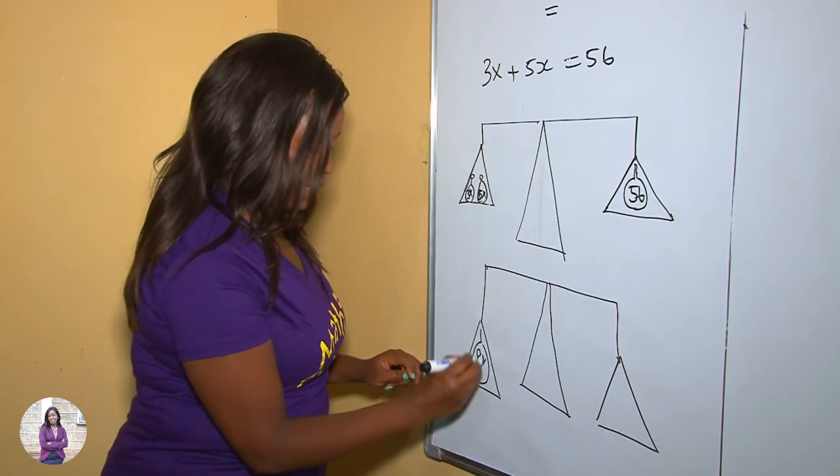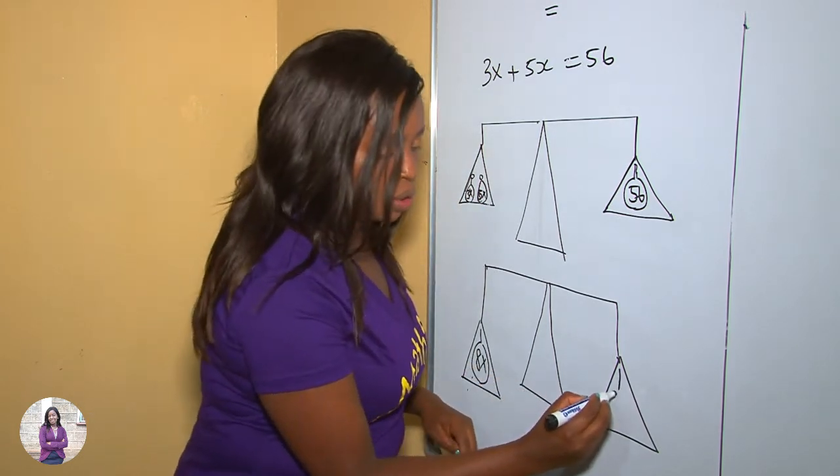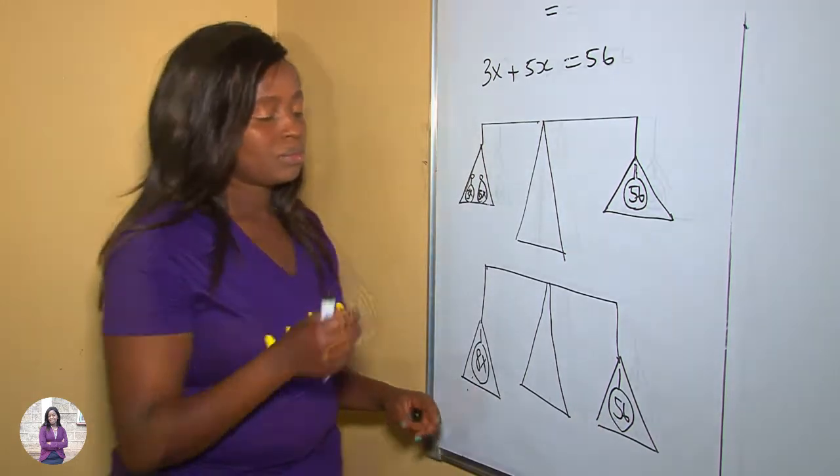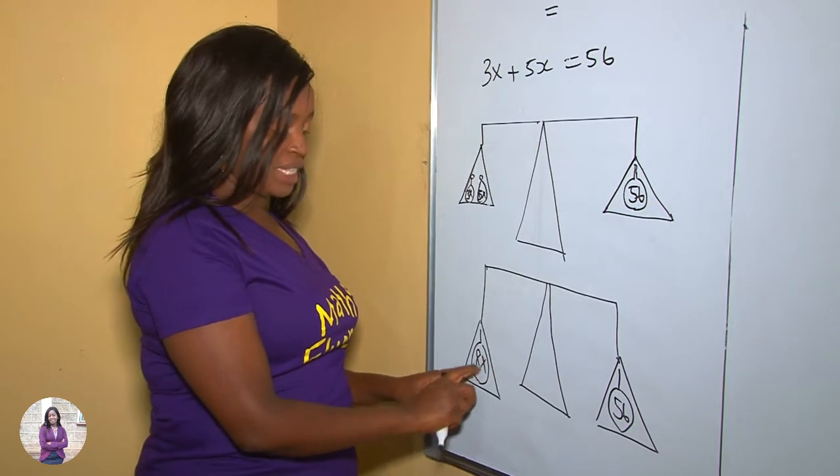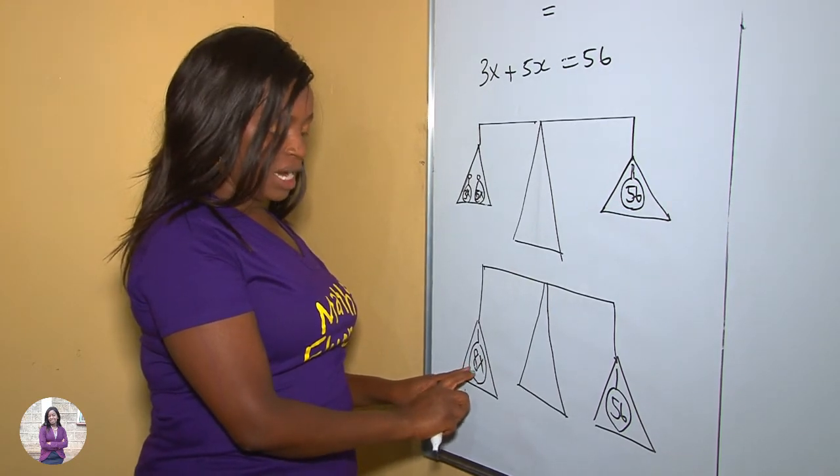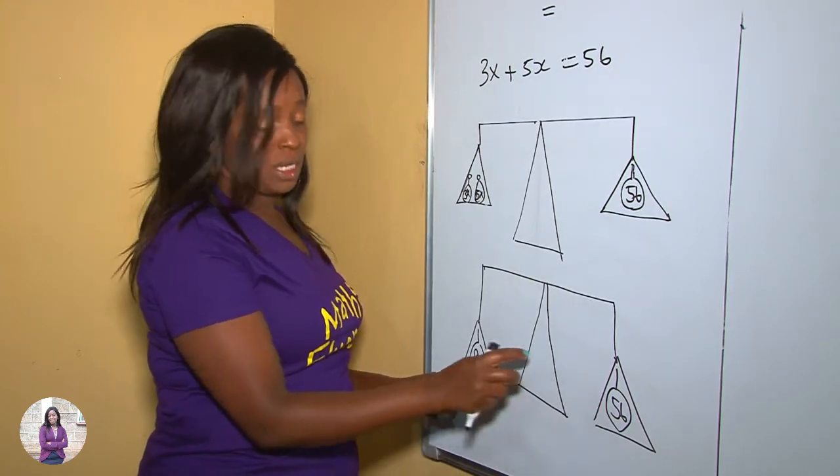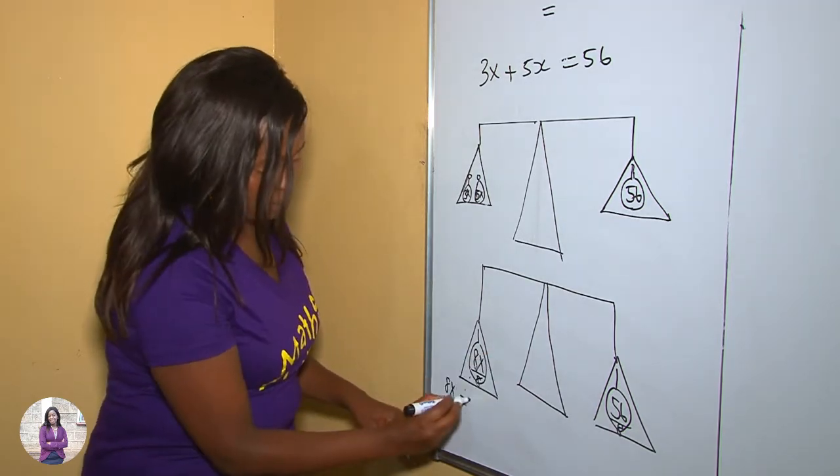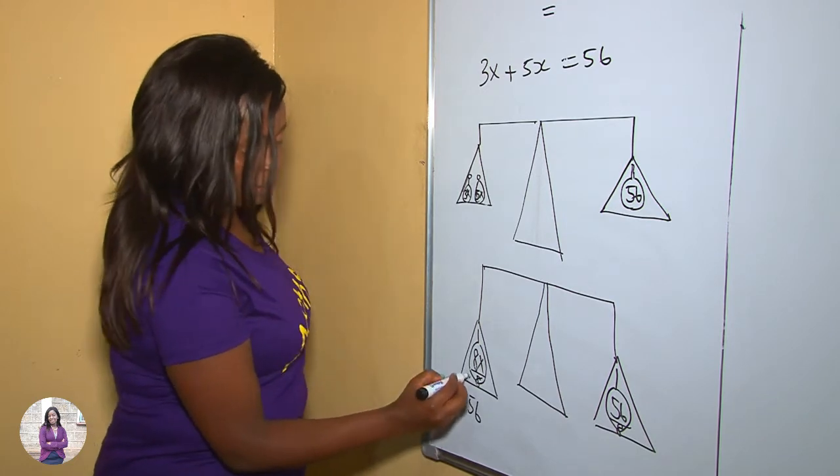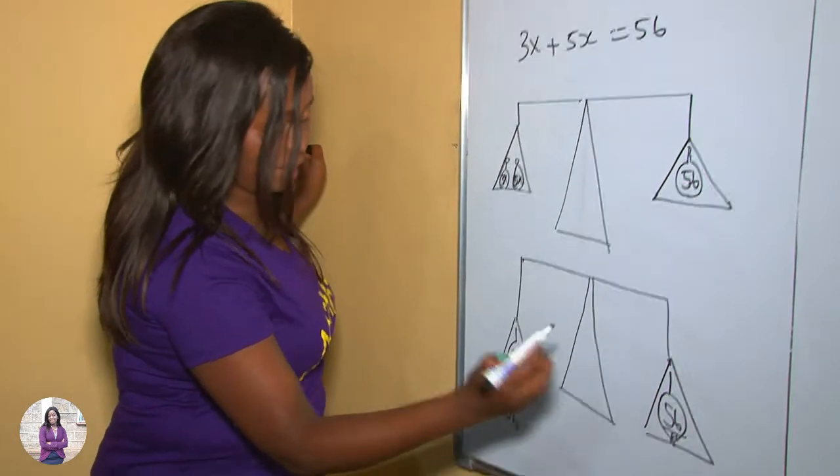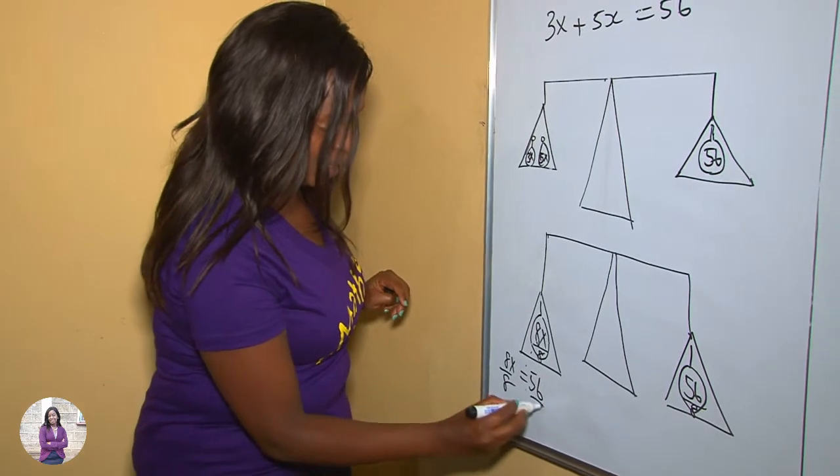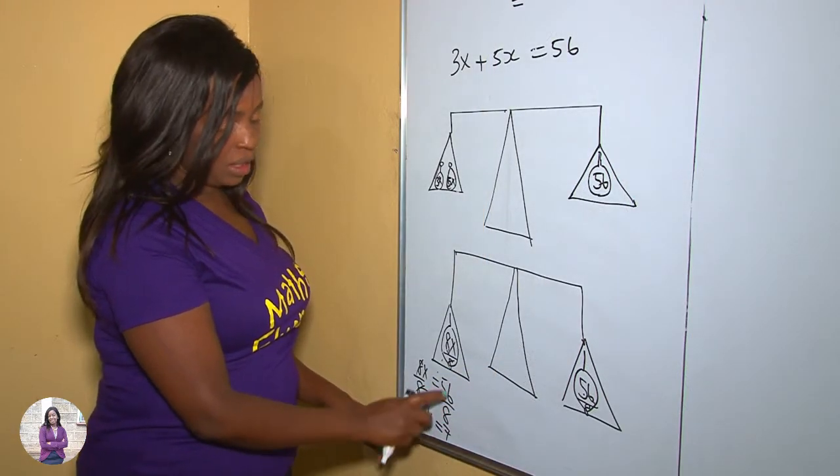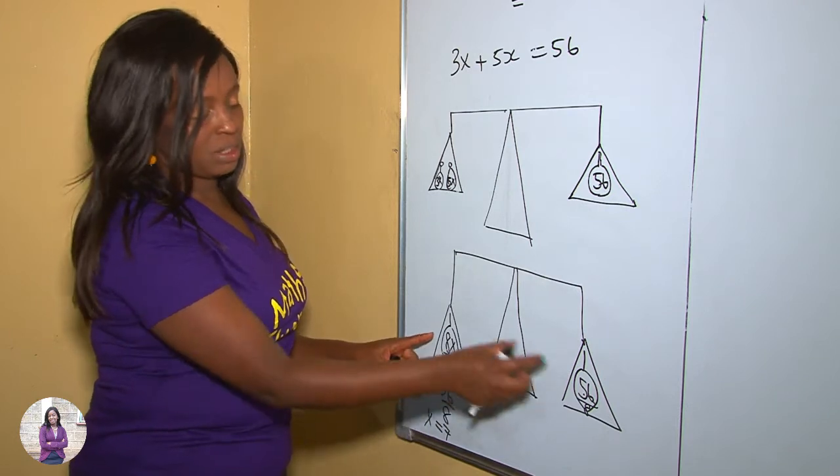And here we still got to have one bag containing 56. Now for us to remain with these x here, as you can see, this is the number. That is, 8x is equals to 56. So whatever you have done, whatever you are doing on the right, you also did on the left. So divide on both sides by 8. 56 divided by 8 is 7, meaning there are seven x's both here and there.